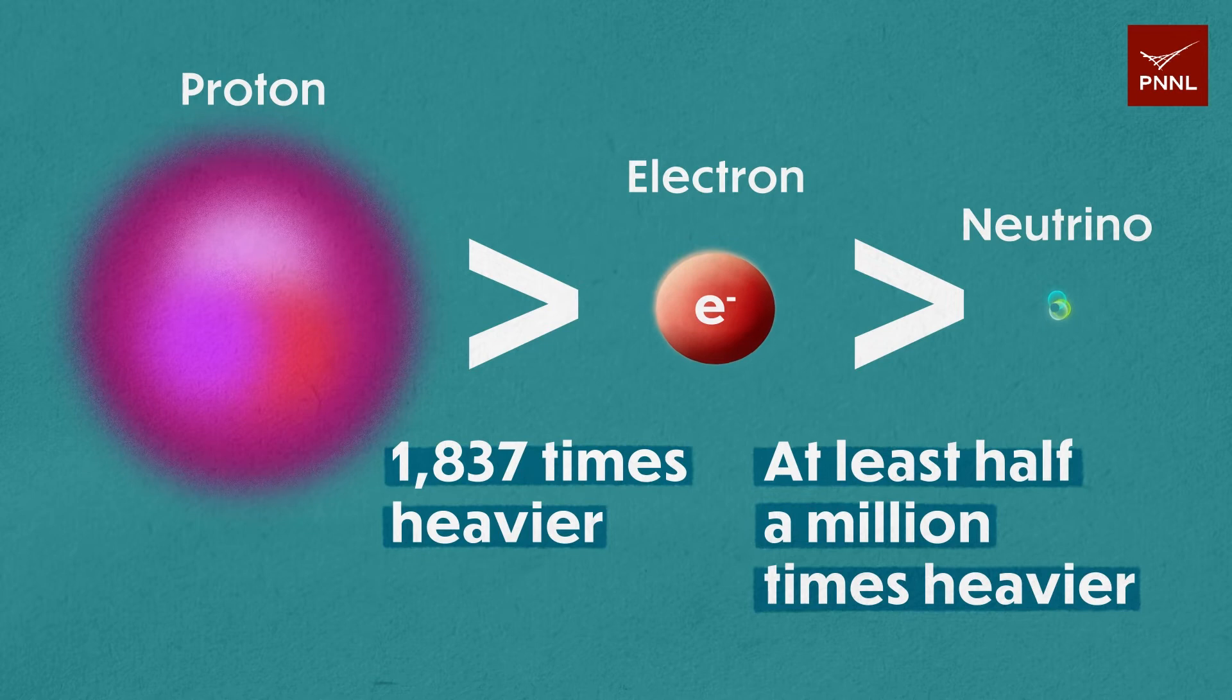Neutrinos are extremely light compared to protons and electrons, so how will the team weigh them? That's where CRESS comes in.